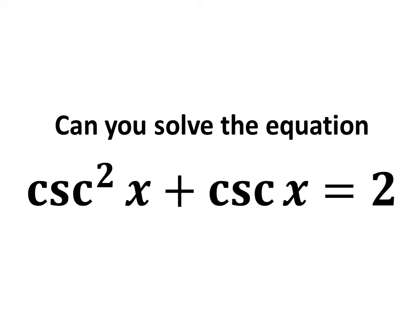In this video, we will learn to solve the equation: square of cosecant of x plus cosecant of x is equal to 2.